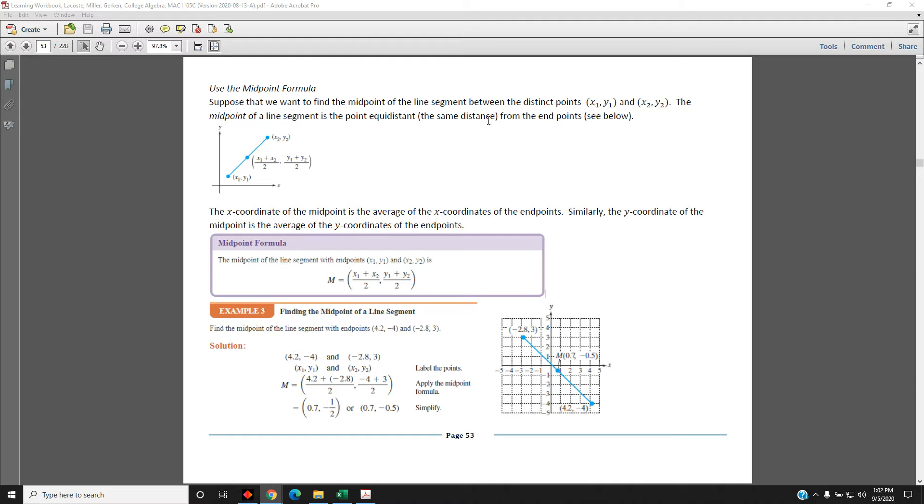The midpoint of a line segment is the point equidistance, i.e. the same distance, from the endpoints. See below. So here's our first point, x1, y1. Here's our second point, x2, y2. We want to find the midpoint, which is the point that is exactly halfway in between those points.